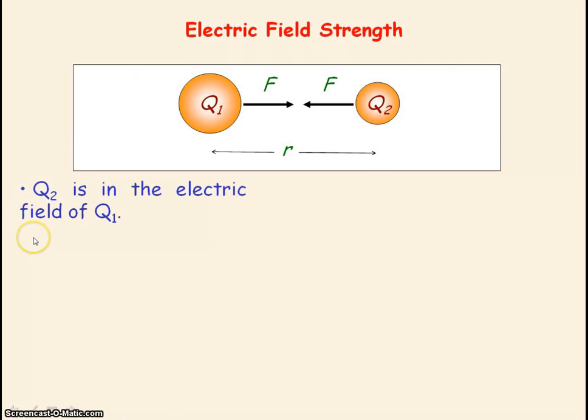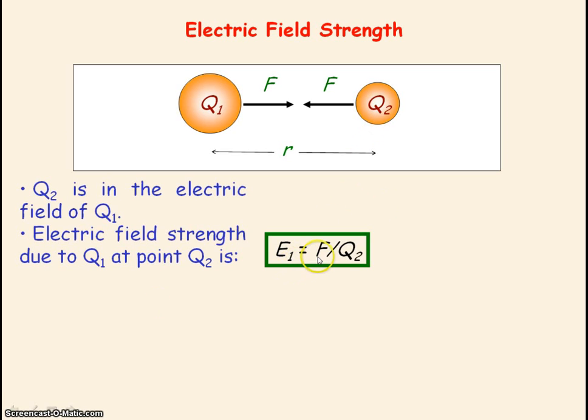Q2 is in the electric field of Q1. If we determine the electric field strength due to Q1 at the point where Q2 is, the definition of electric field strength at a point equals the force exerted per unit charge at that point. So the electric field strength equals force divided by charge Q2.